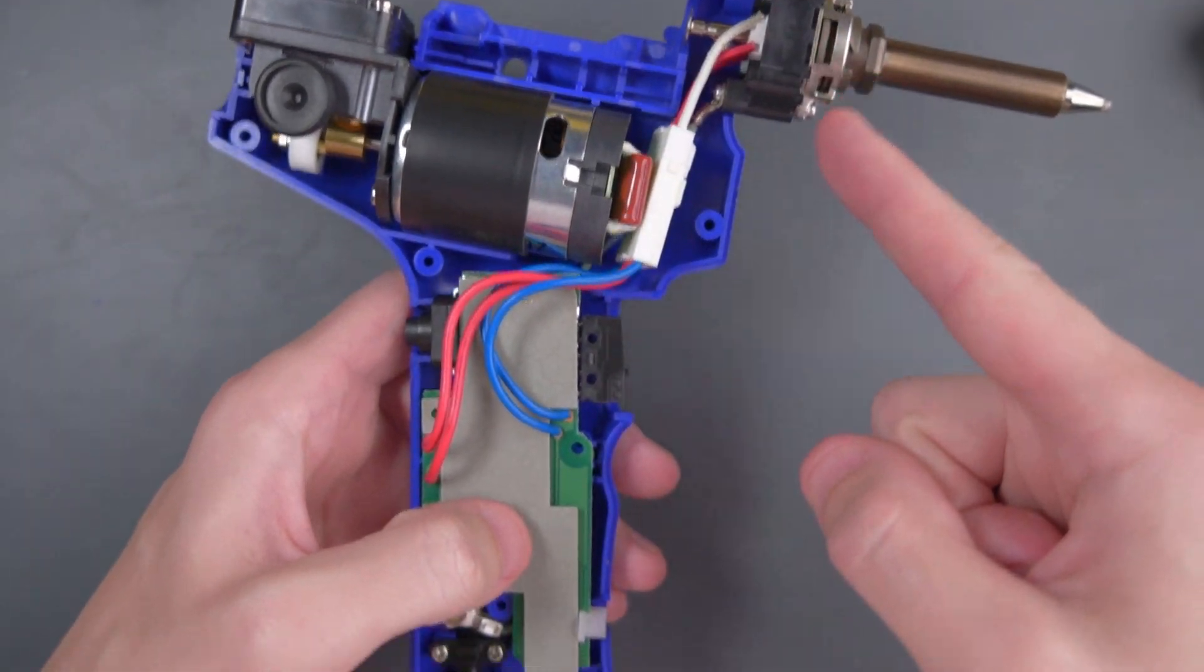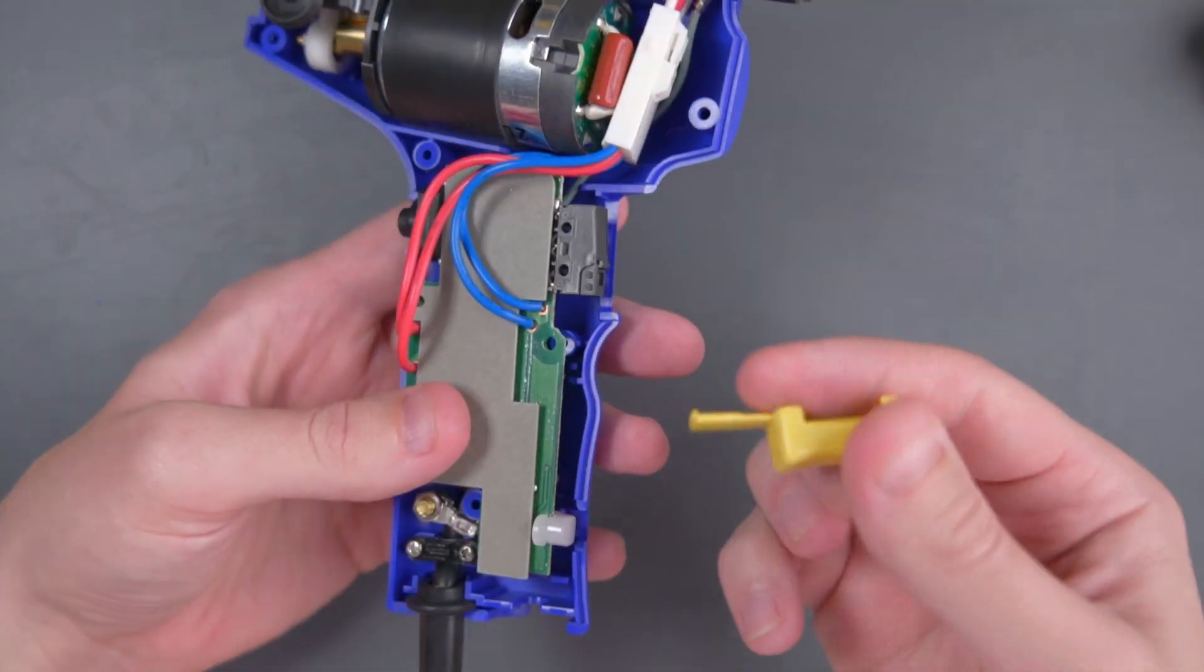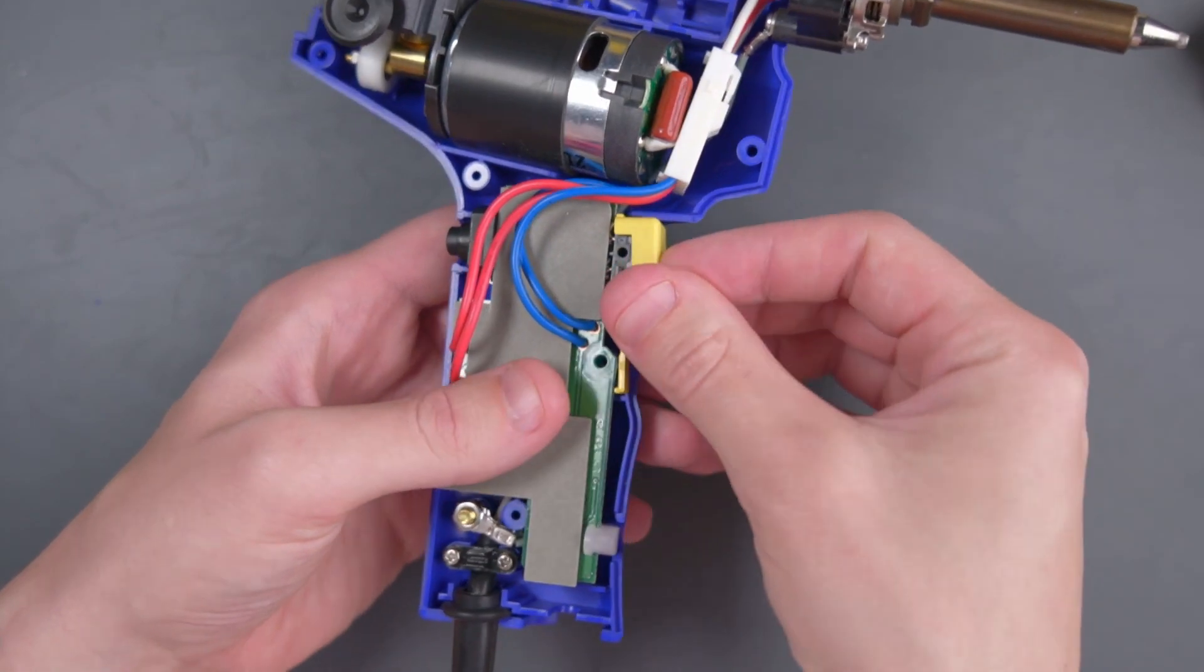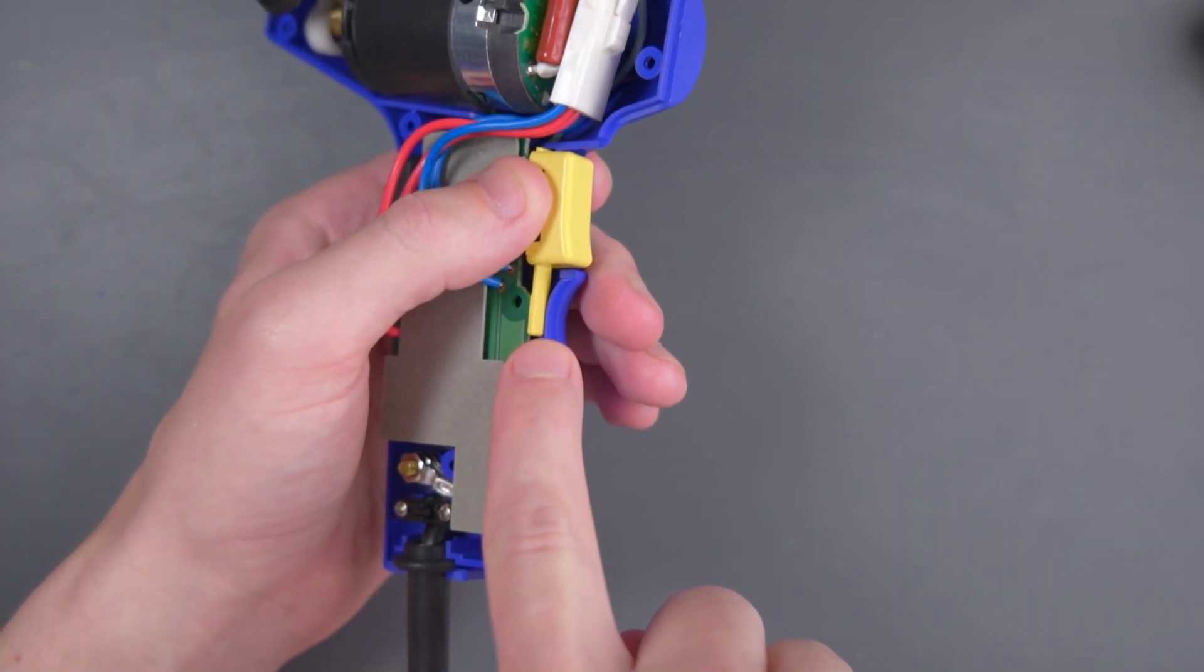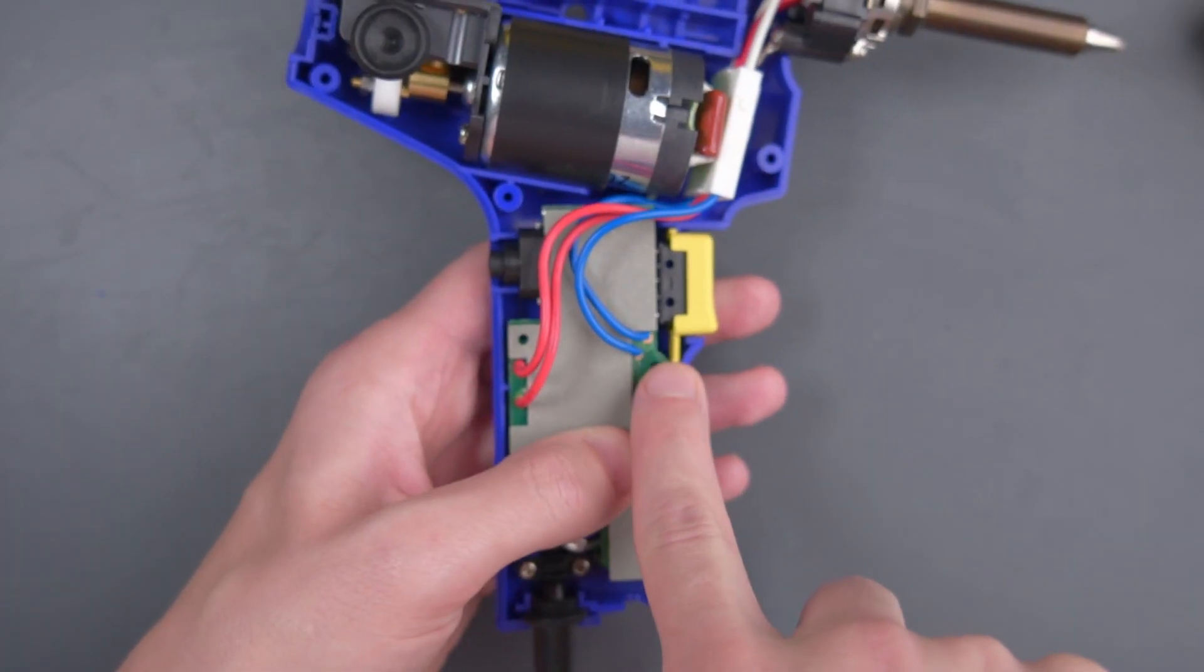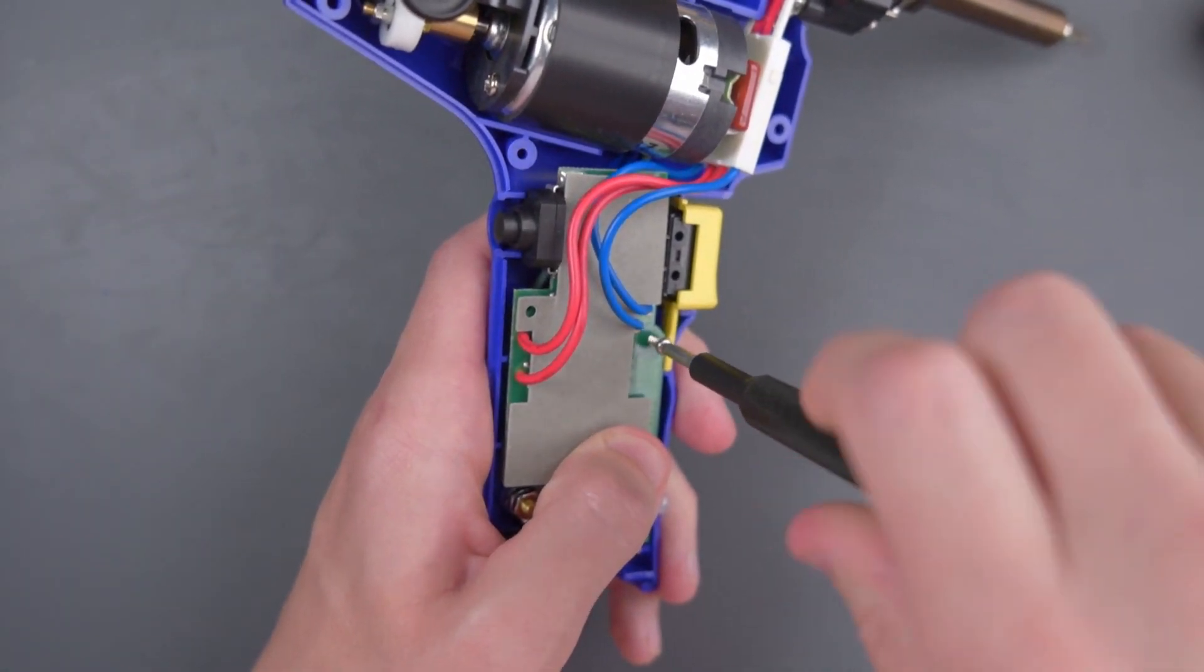Now with the nozzle secured, let's secure the PCB here. We're going to need to put the little switch cover on the button. It's going to sit in a little slot right there. Make sure no wires are being pinched anywhere, especially these ground wires down here. Then secure the PCB with those two screws.